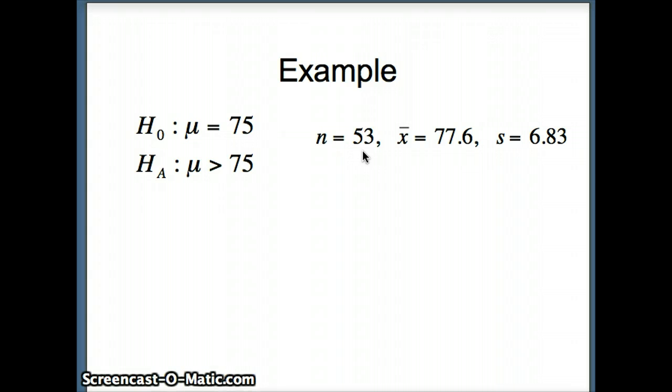Once that's done, now we can construct our test statistic t: x̄ minus μ divided by s over root n. The x̄ value is going to be 77.6. The μ value we are comparing it to is the μ value from our null hypothesis, which is 75. s is 6.83, root n is root 53.